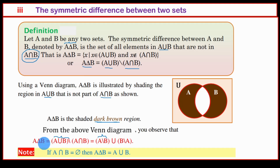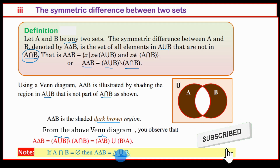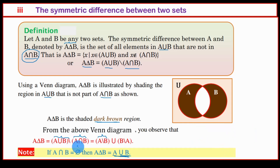The symmetric difference between set A and set B: if A intersection B is equal to the empty set, then A union B less A intersection B — since A intersection B is empty — becomes simply A union B. So A delta B equals A union B when A and B are disjoint.